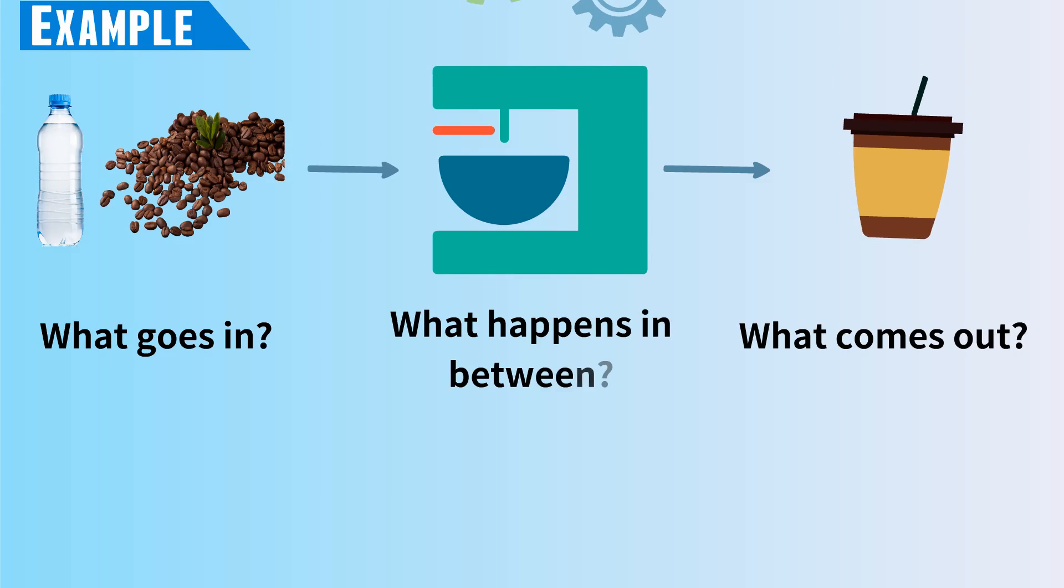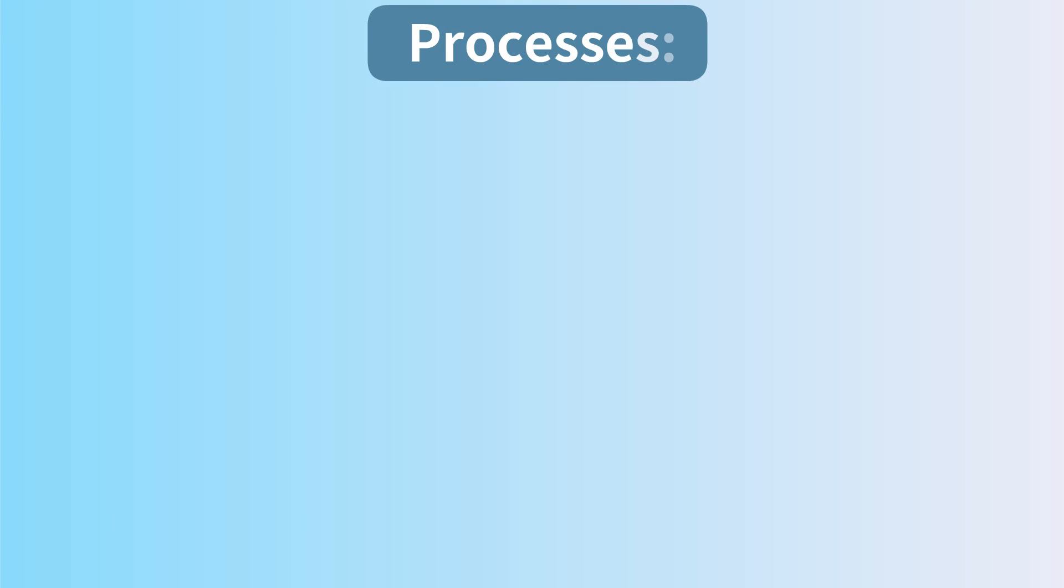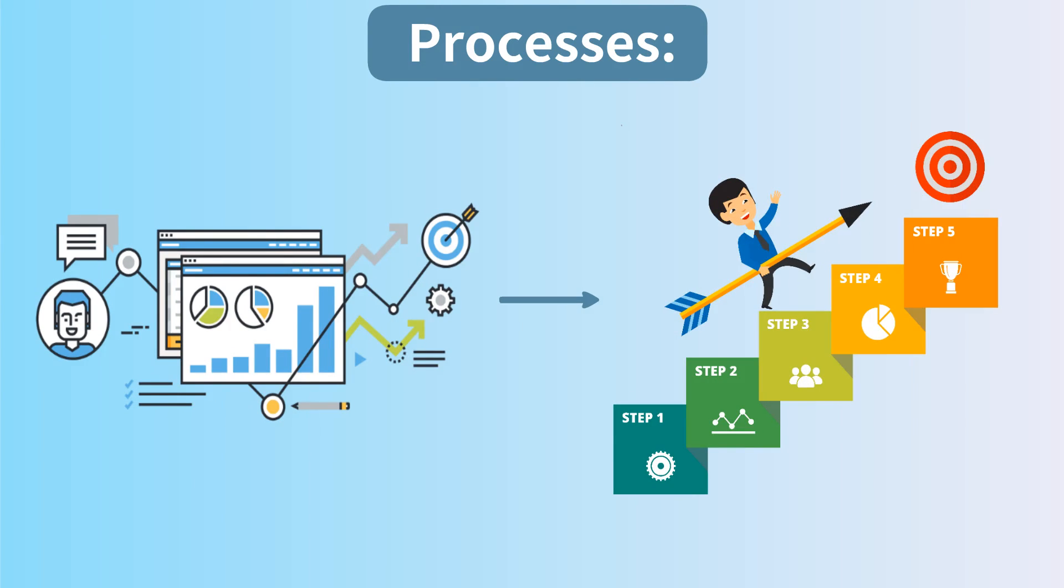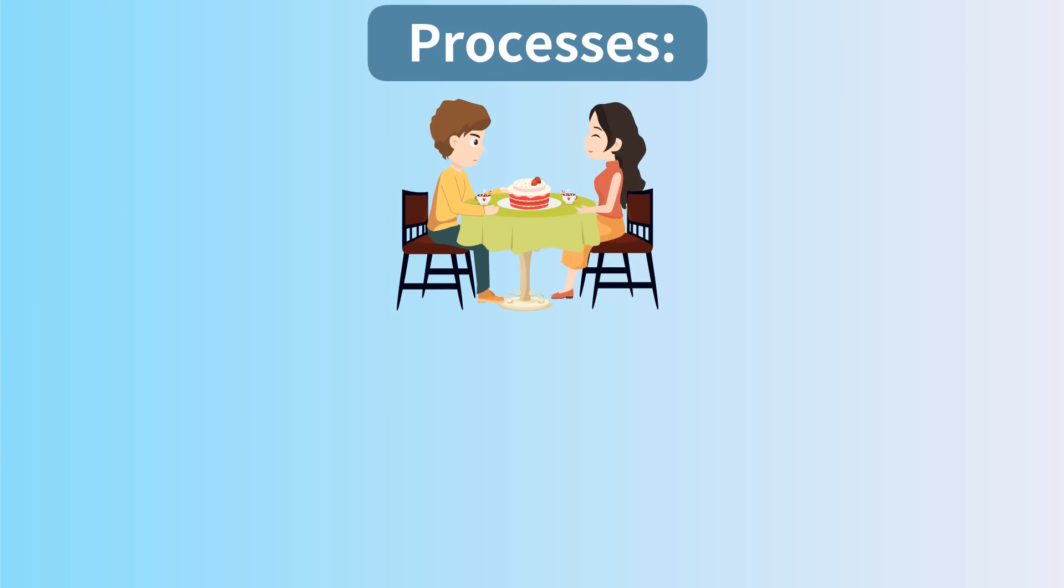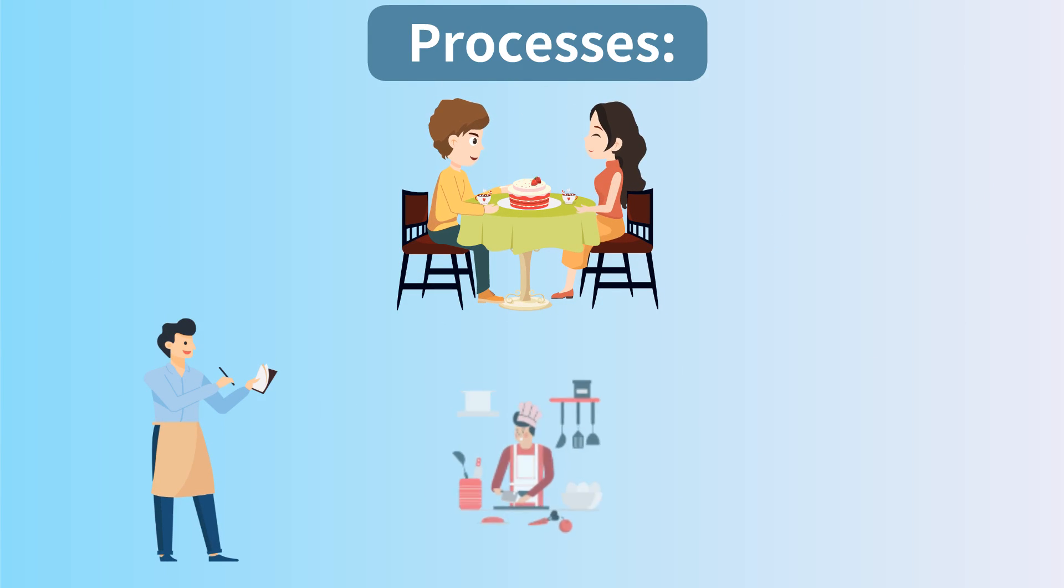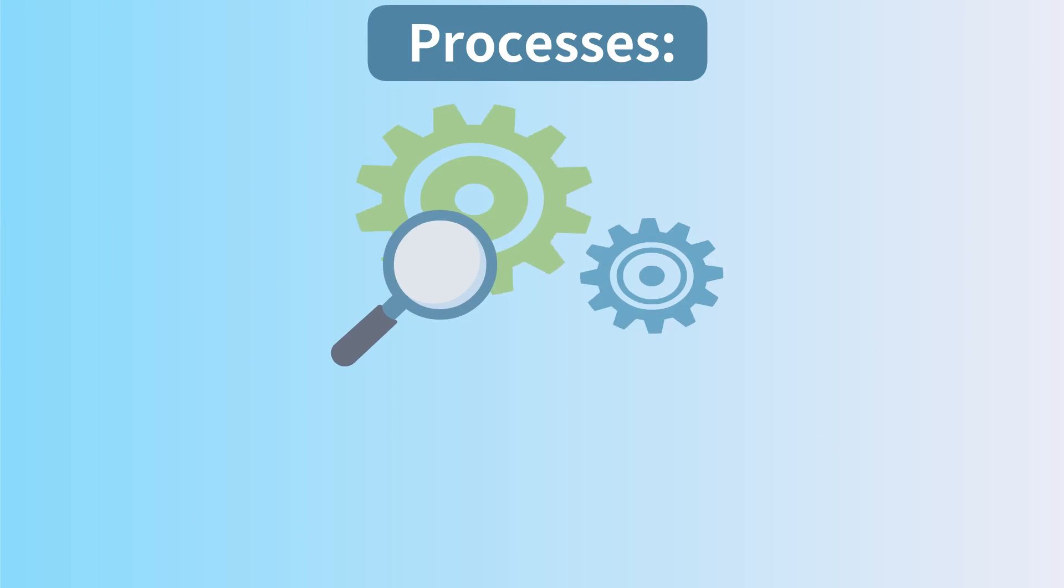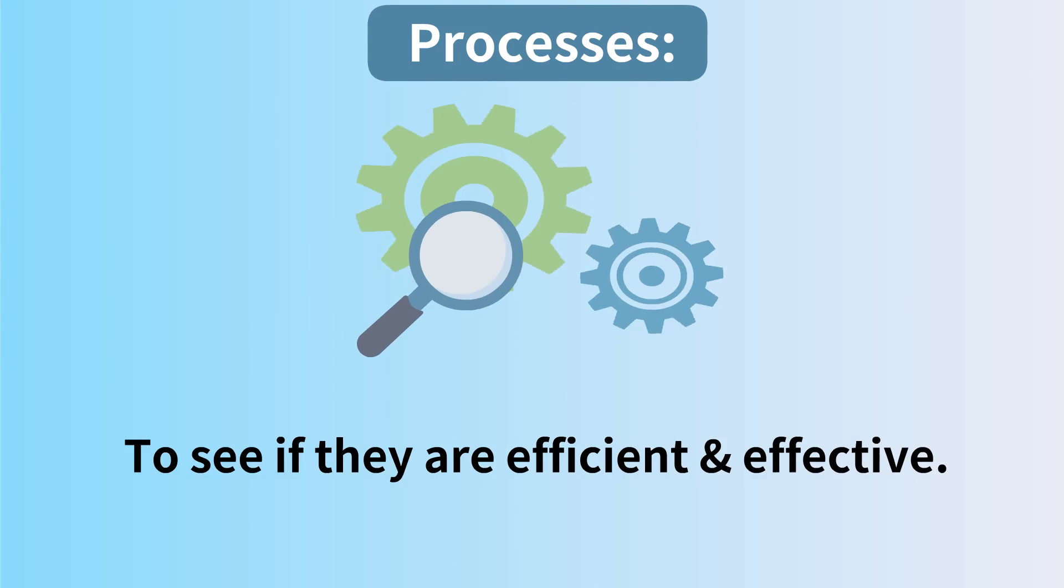Processes: Systems often involve a series of steps or processes. In a restaurant, the process includes taking orders, preparing food, and serving customers. System analysis looks at these processes to see if they are efficient and effective.